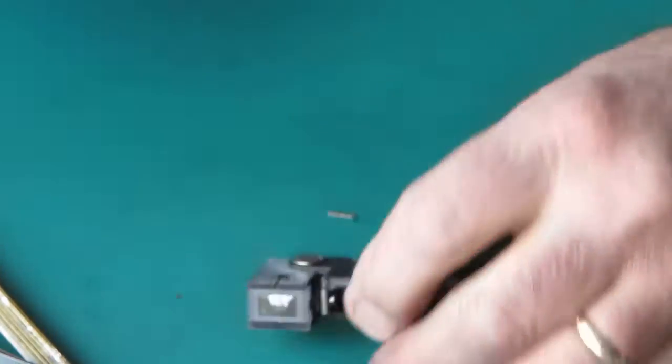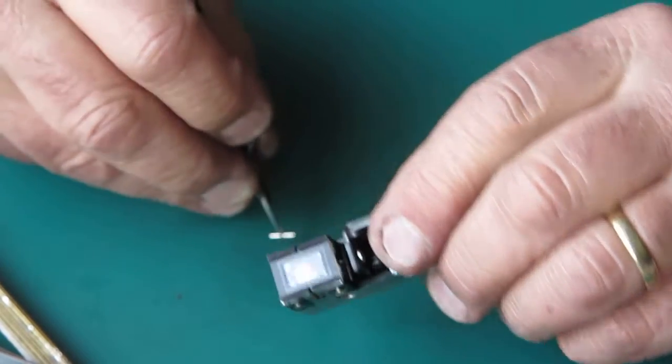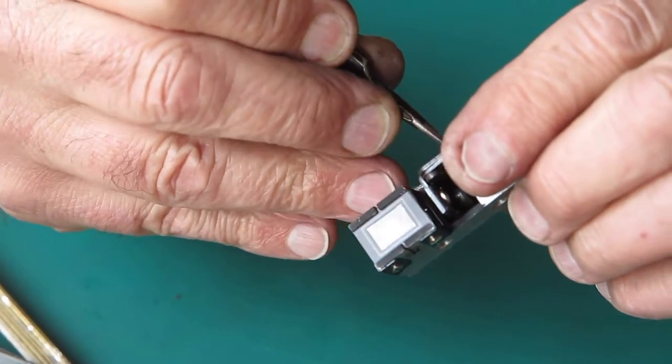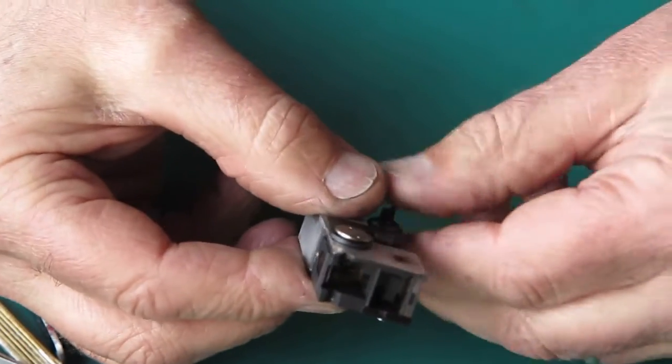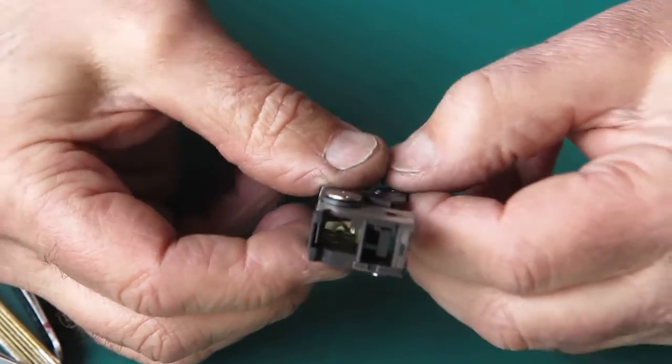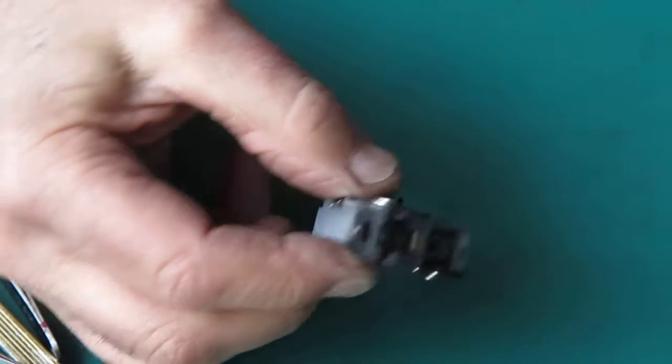And I'll put the pin through here through the spring, stretch that out and drop the pin into the notch at the back of the rangefinder. Just check that's moving freely and it is.